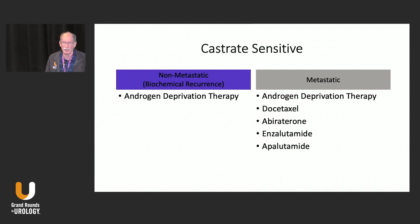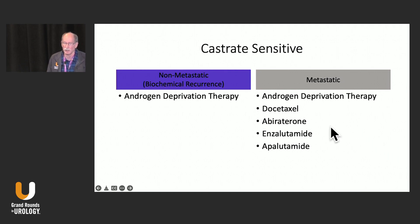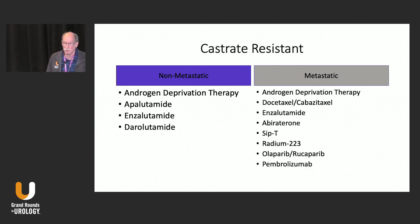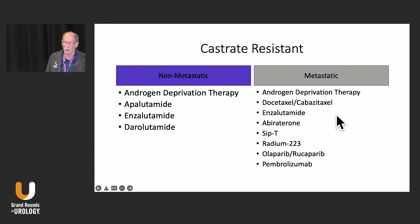To review quickly: non-metastatic castrate-sensitive is really just another way of saying biochemical recurrence, and ADT — whether intermittent or continuous — is what we use. On the metastatic castrate-sensitive side you have ADT with docetaxel and the three androgen pathway inhibitors. On the castrate-resistant side, ADT and three androgen pathway inhibitors. And metastatic CRPC has our longest list of options, now growing further with the addition of immuno-oncologics. ADT remains the foundation across all of these buckets.